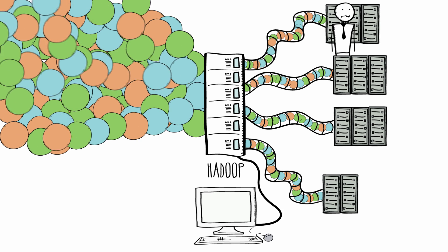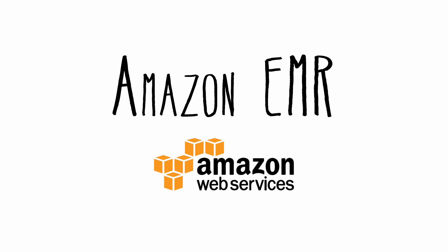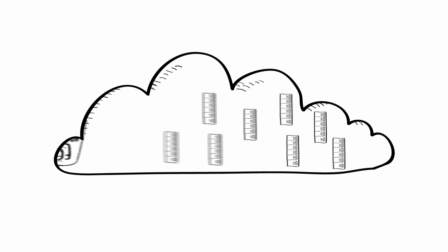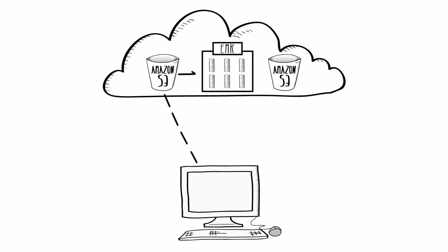Wouldn't it be great if there was an easier way? Amazon Elastic MapReduce, or Amazon EMR, can make things much easier. Using the elastic infrastructure of Amazon EC2 and Amazon S3, Amazon EMR provides a managed Hadoop framework that distributes computation of your data over multiple Amazon EC2 instances.